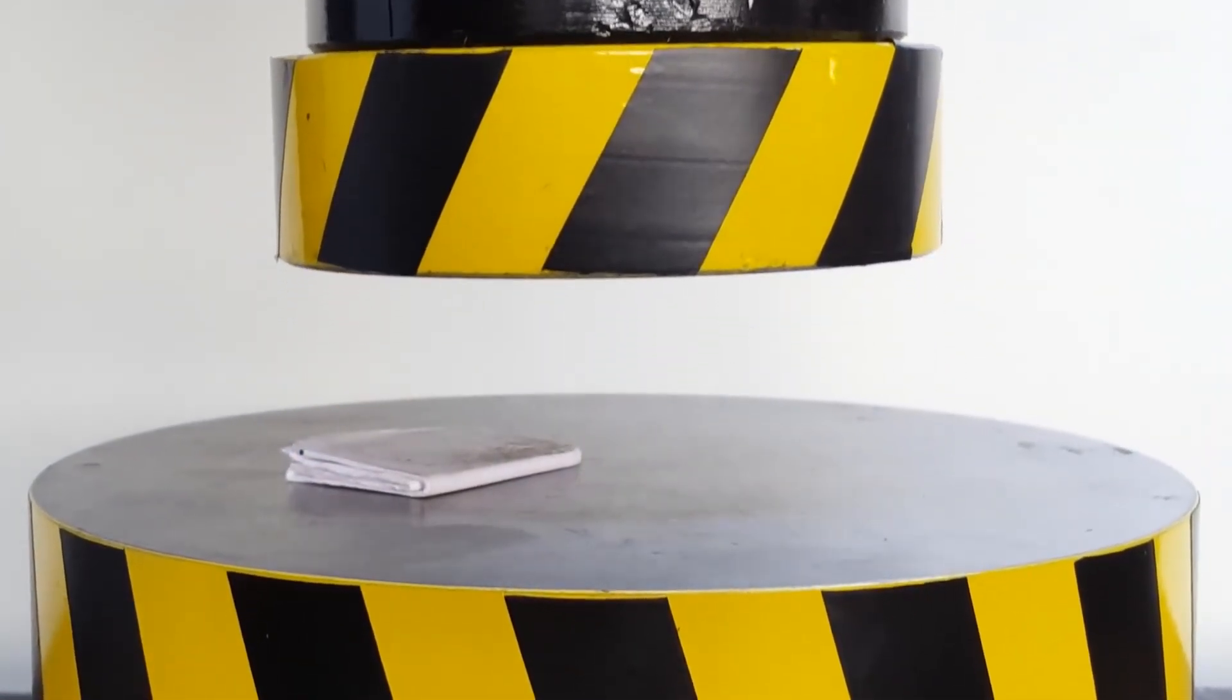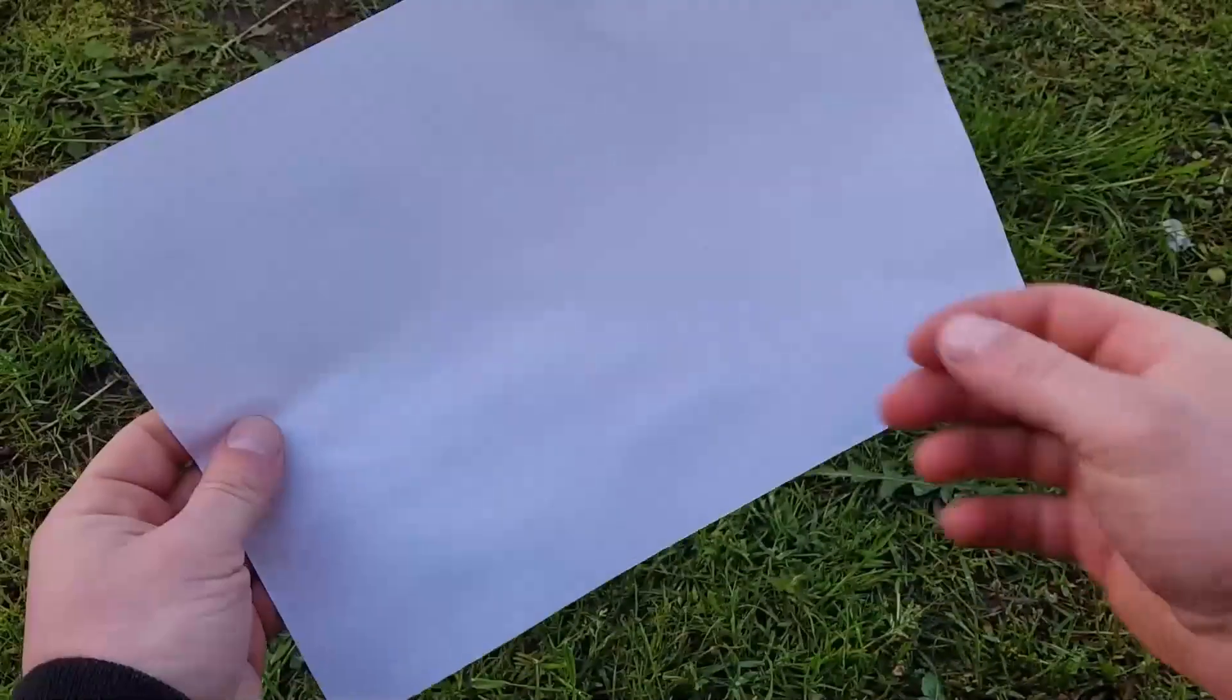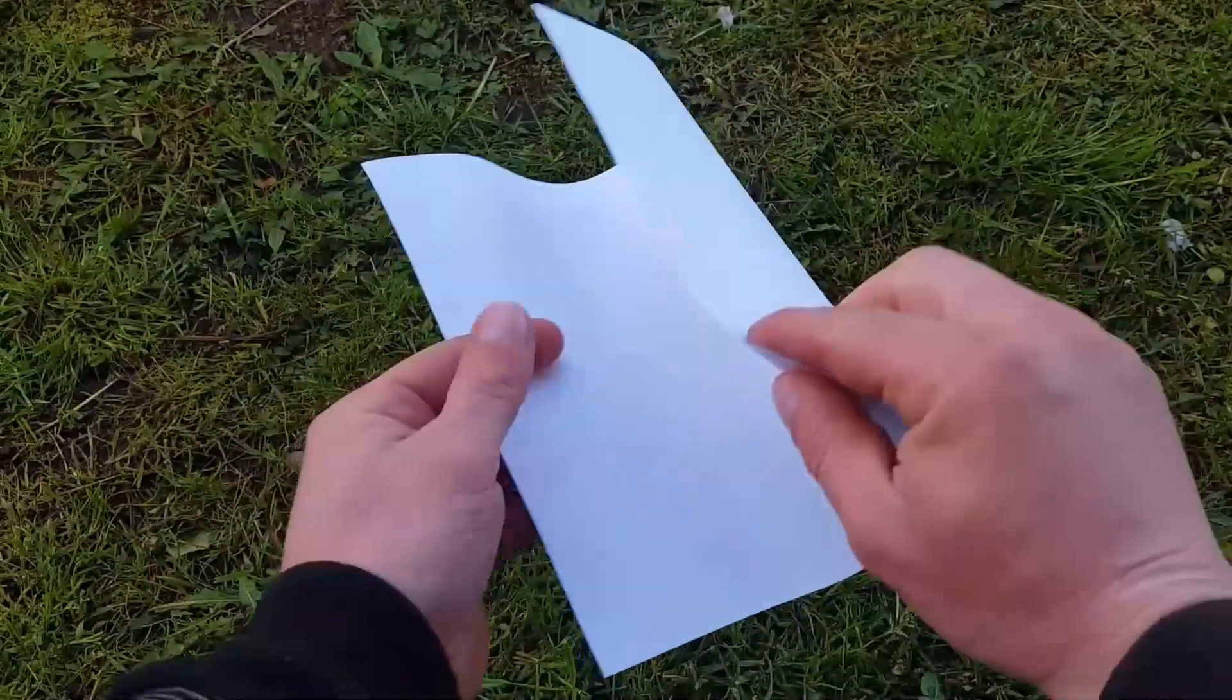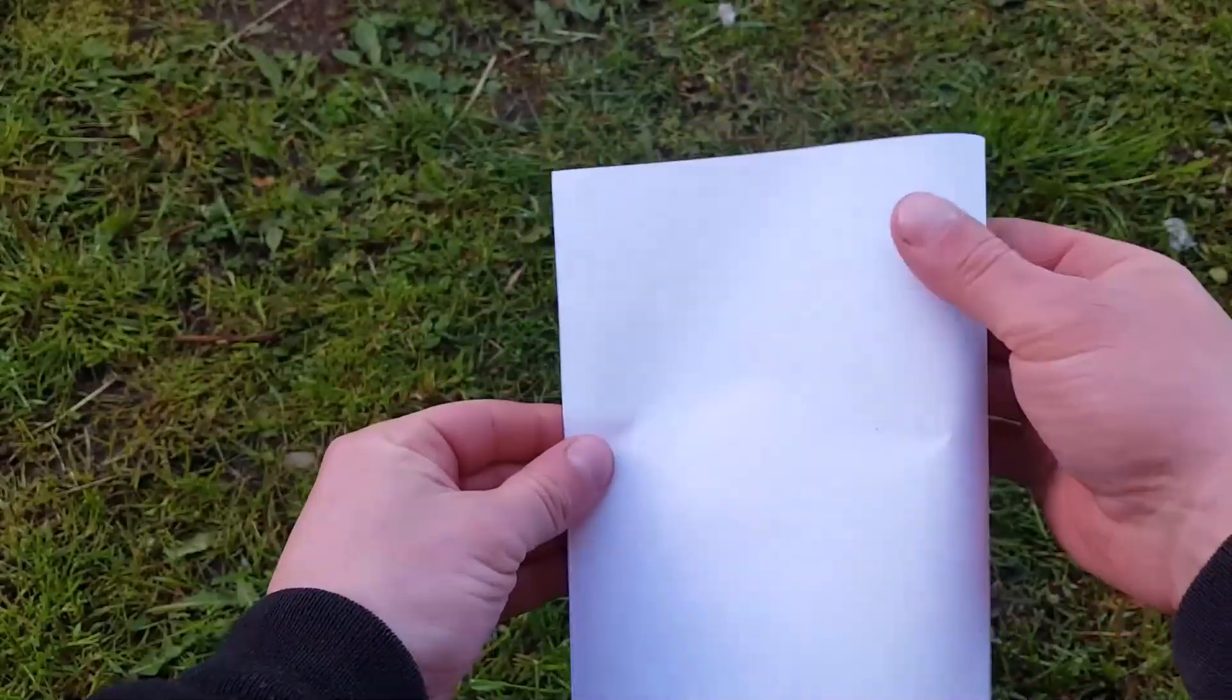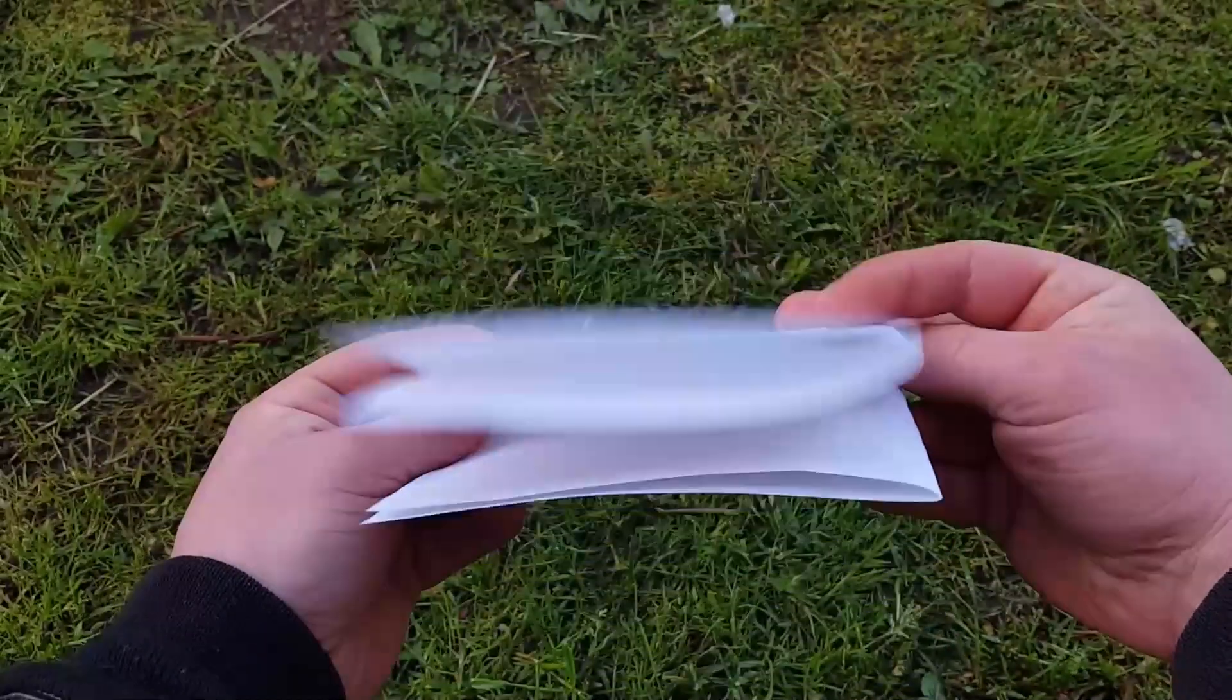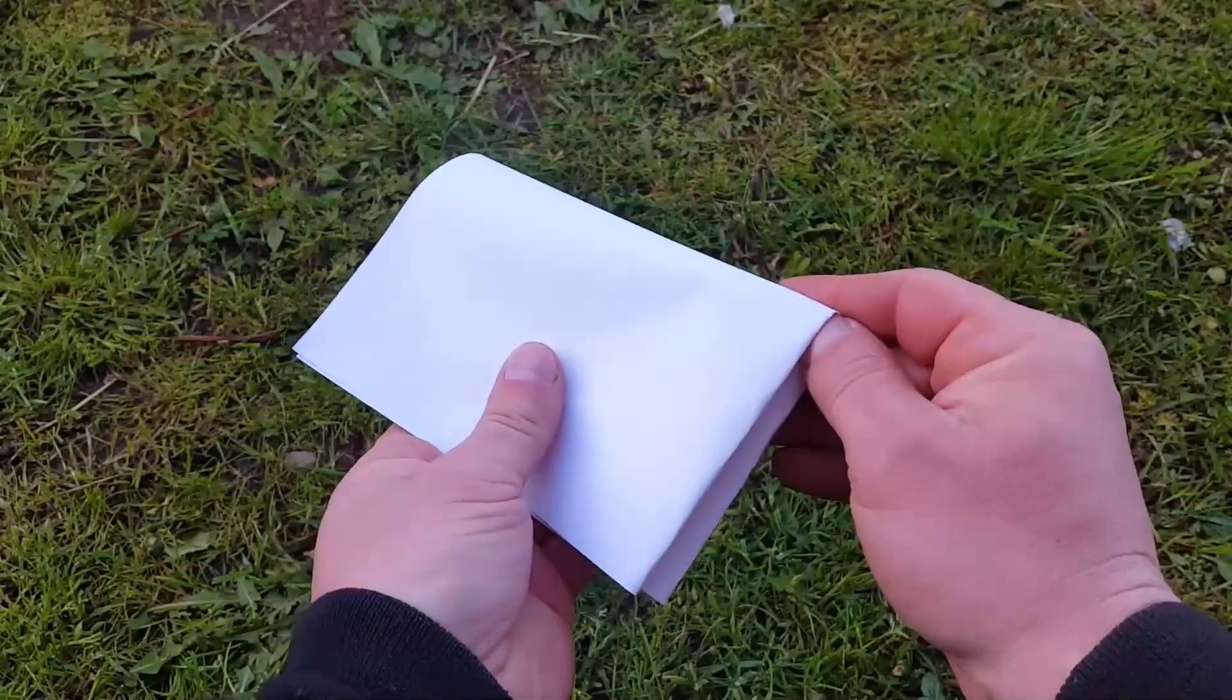The limit of folding paper in half is a phenomenon where it is impossible to fold a sheet of A4 paper more than 7 times in half, folding it each time perpendicular to the previous one. This is due to the rapid growth of layers of folded paper.